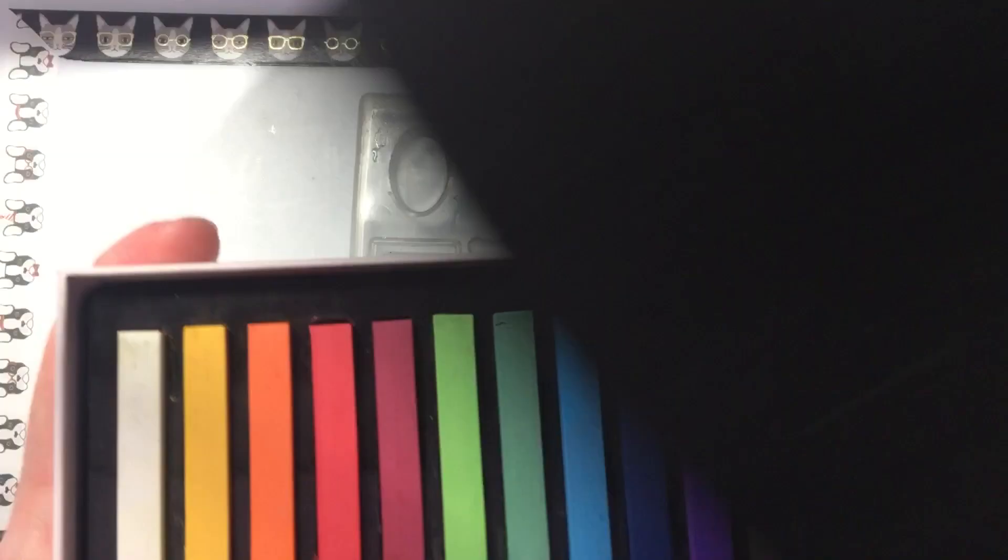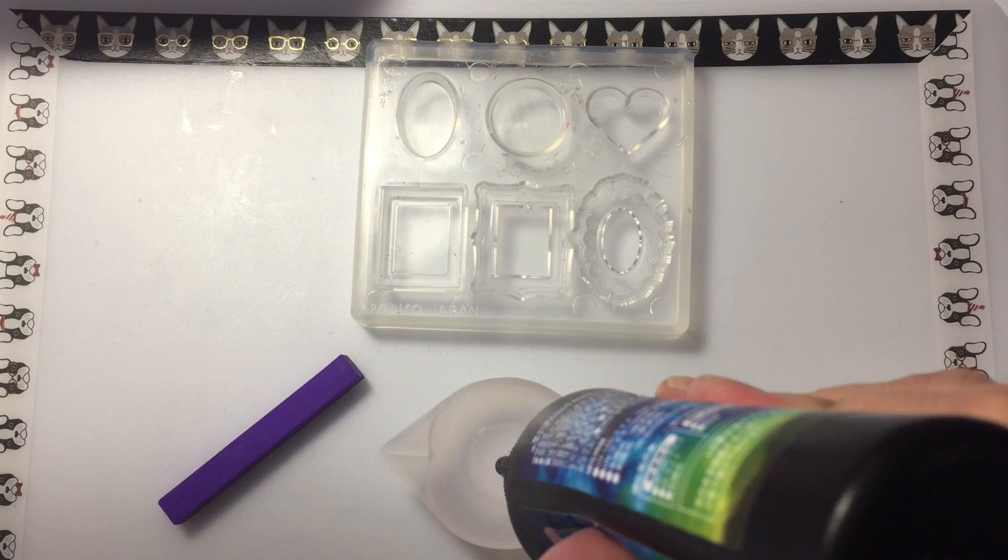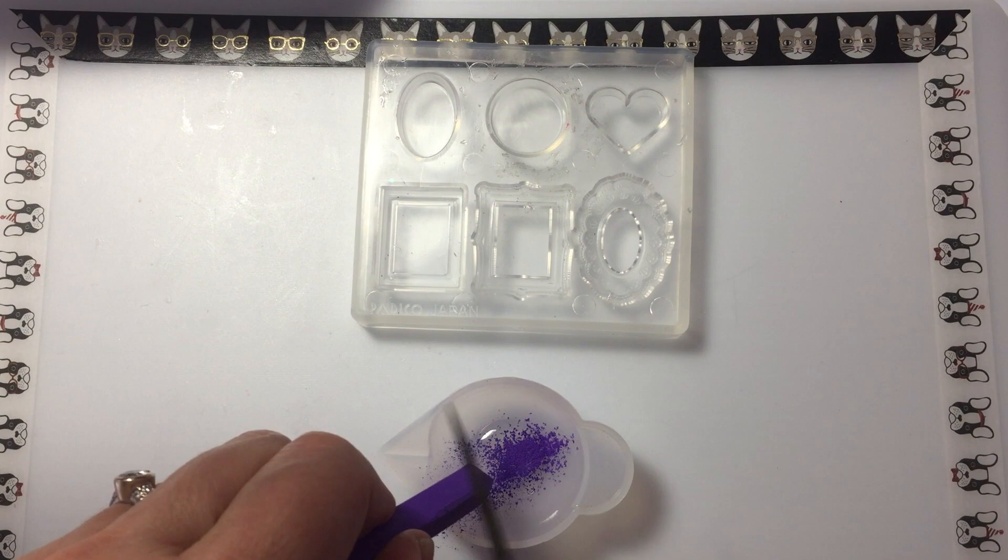The third method that I'm using is chalk pastels. I really love this method. It gives a really nice opaque smooth color to the resin. And as with almost all the items that I'm using to color resin, a little bit goes a long way.